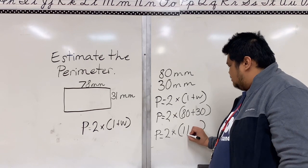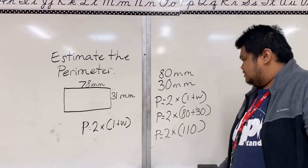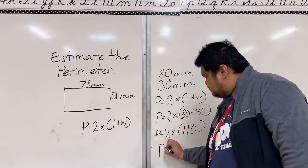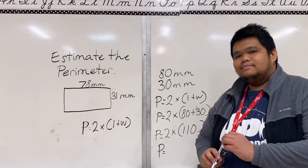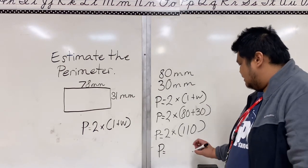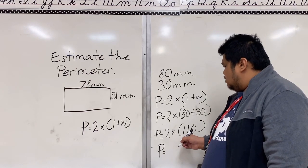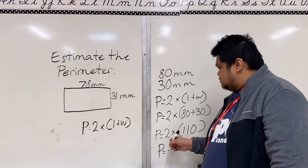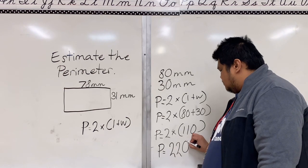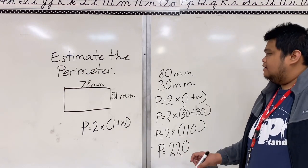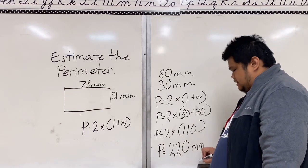P is equals to two times - what is 80 plus 30? Yes, we got 110. Now, so what is the perimeter or the final answer? Two times 110. Yep, you got it right. 110 times 2 is 220. Don't forget to write the unit, which is millimeter.